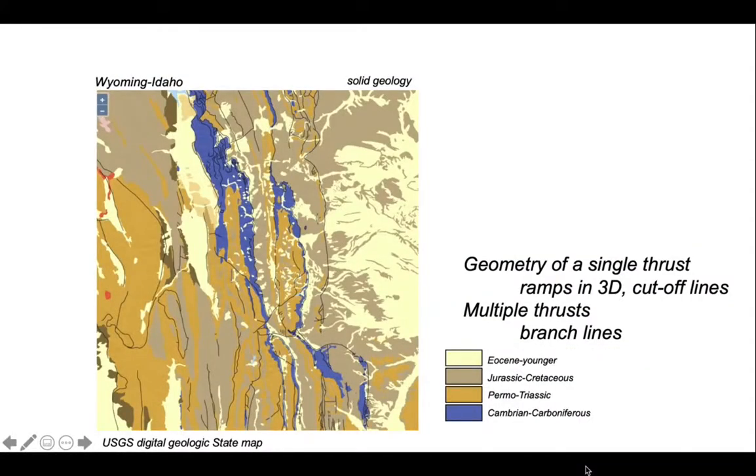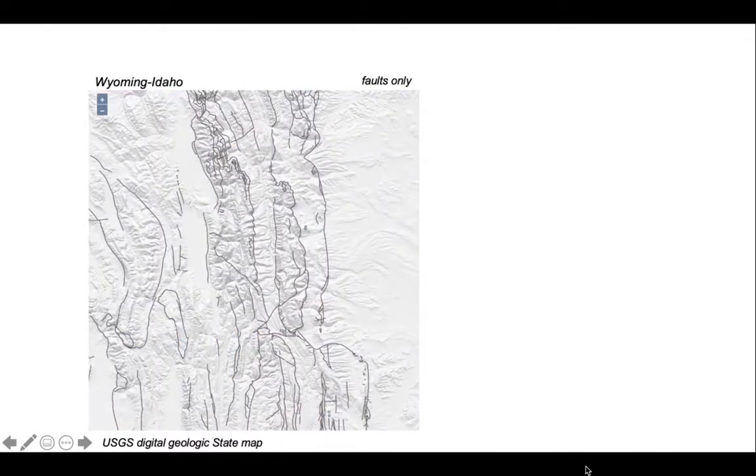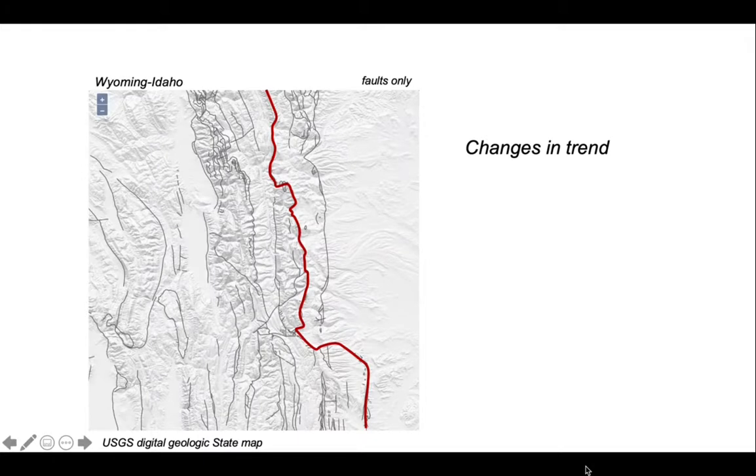We can set the scene using the example from the Laramie thrust systems in the Wyoming-Idaho segment of North America. Looking at the fault trace, these are chiefly thrust faults. Let's pick out one of them and notice how it changes in trend as it wanders across the map. We'd like to explain these changes.